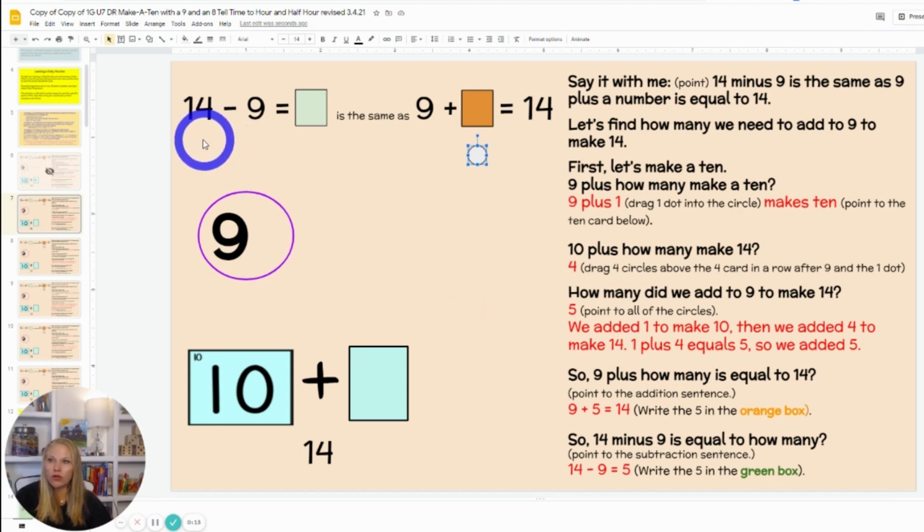So I'm going to start with, say it with me: 14 minus 9 equals unknown is the same as 9 plus an unknown number equals 14. Now, some students might benefit from also having the math mountain on the screen and showing that 14 is my total and 9 is one of the partners, and we're looking for the other partner.